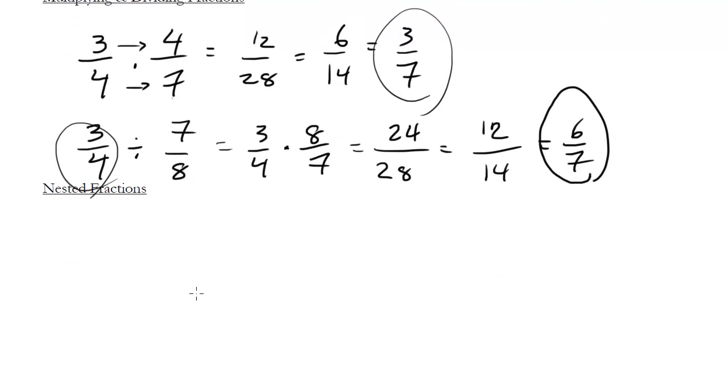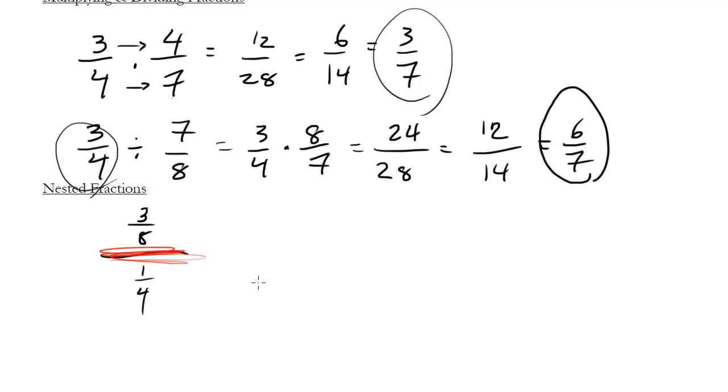Finally nested fractions. This is where you have weird things like 3 eighths divided by 1 fourths. The main thing here is just find your main dividing line. So notice this guy is the big dividing line, so that tells us how to figure this out. So there's two ways to do this. One, we could just do the multiply by the reciprocal method, so this is the same thing as 3 eighths times 4 over 1, which gets us 3 halves.